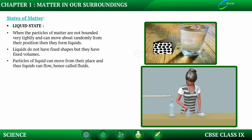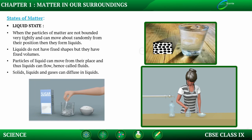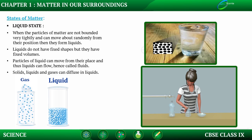Solids, liquids, and gases can diffuse in liquids. We have studied that solids and liquids diffuse in liquids. For example, sugar, being the solid state of matter, has dissolved in water. Similarly, ink in its liquid form has diffused or dissolved in water.